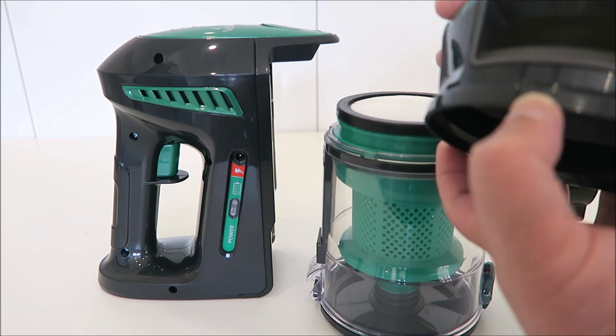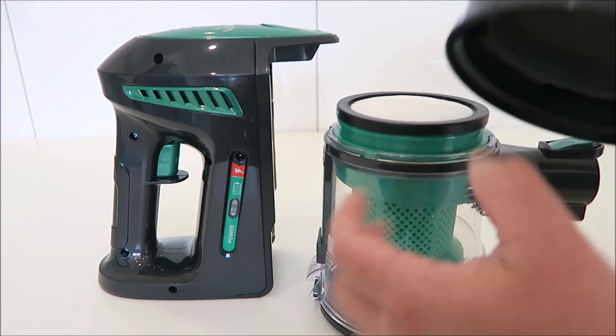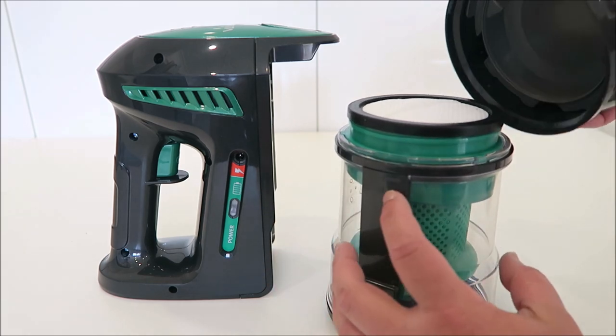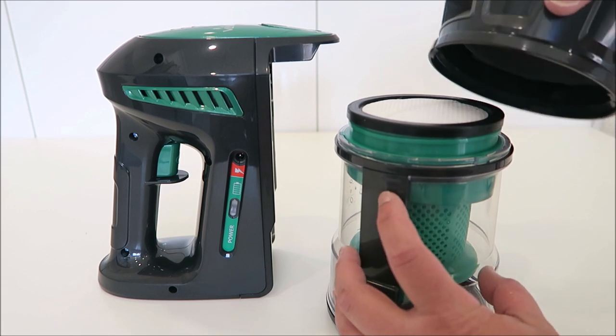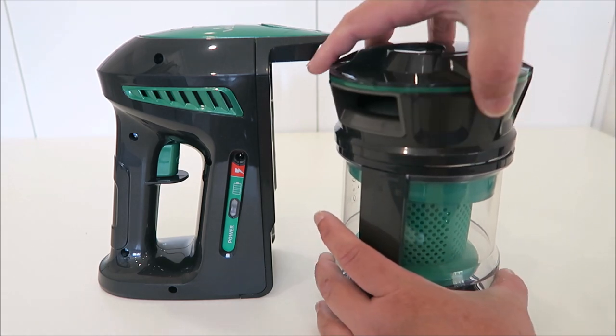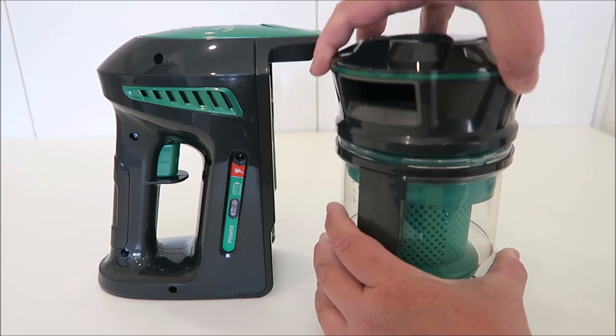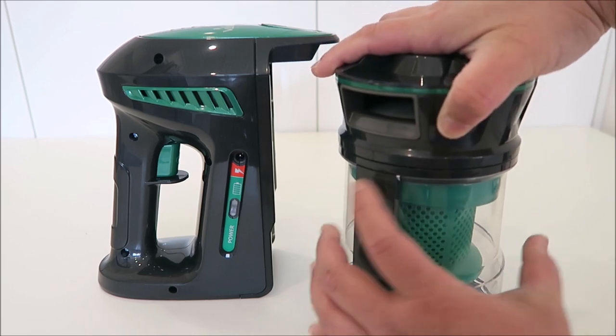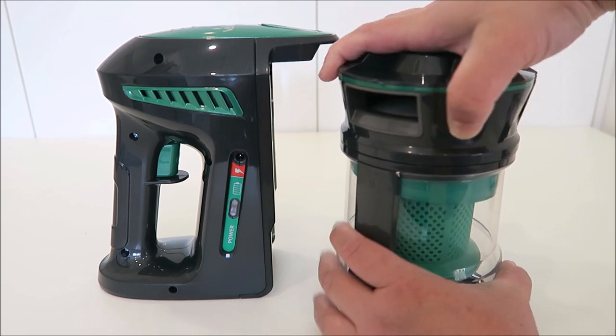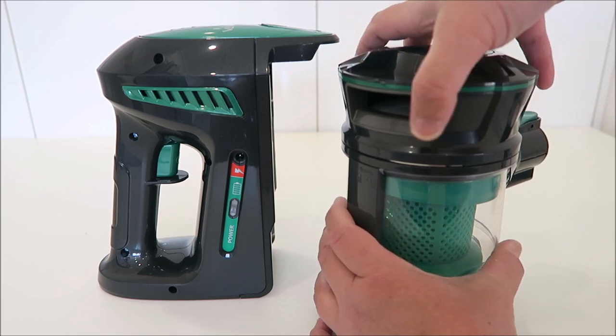And then you just need to twist this to open this up. So on the cap itself, there's this arrow here. And then you have to point it to this lock and unlock button here if you want to put it back again. So for example, let's put it back. So this is the lock and then you move it over. It's unlocked.